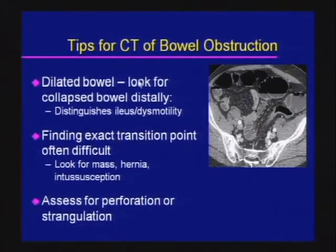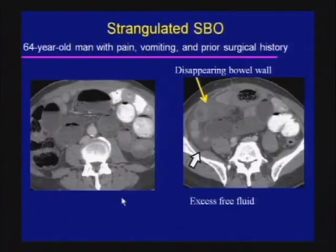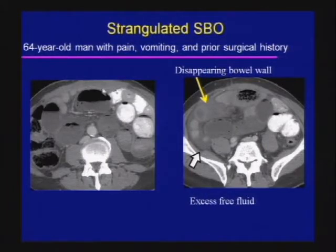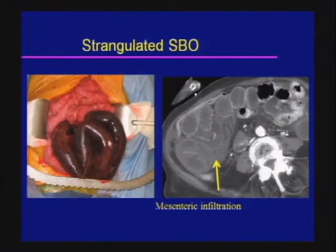CT tips: don't spend a lot of time looking for the transition point. Look in the general area for masses, hernias, and intussusceptions. Assess for perforation or strangulation. Signs of strangulation: a patient with pain, vomiting, and prior surgical history shows dilated loops of small bowel that don't fill with contrast, with loss of the enhancing bowel wall — the disappearing bowel wall sign. Excess free fluid within the area of the transition is also a sign. This patient had dead gut from a strangulated small bowel obstruction.